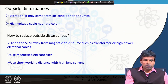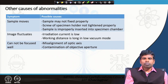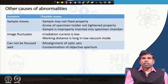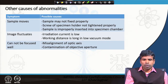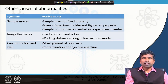Short working distance means the sample is placed very close to the objective lens; when high lens current is applied, outside effects will not strongly affect signal collection. Other causes of abnormalities include the sample moving if not fixed properly, the screw of the specimen holder not tightened properly causing poor grounding, or the sample being improperly inserted into the specimen chamber. Other reasons include low irradiation current, long working distance, misalignment of the optic axis, and contamination of the objective aperture — all of which cause abnormalities in the SEM image.